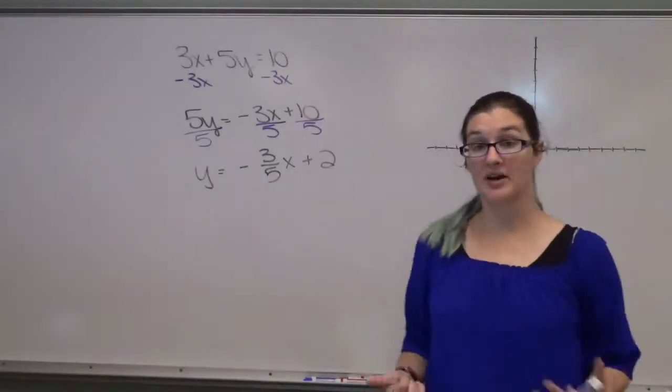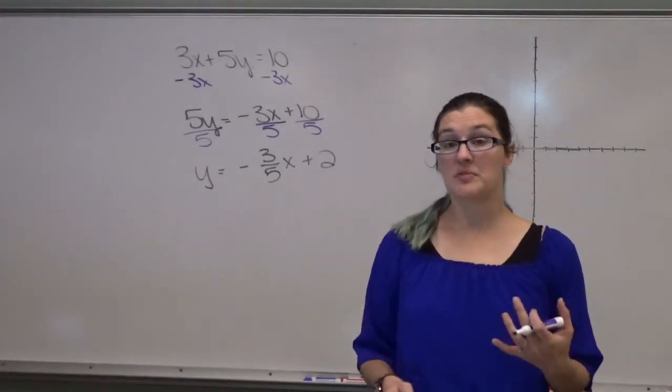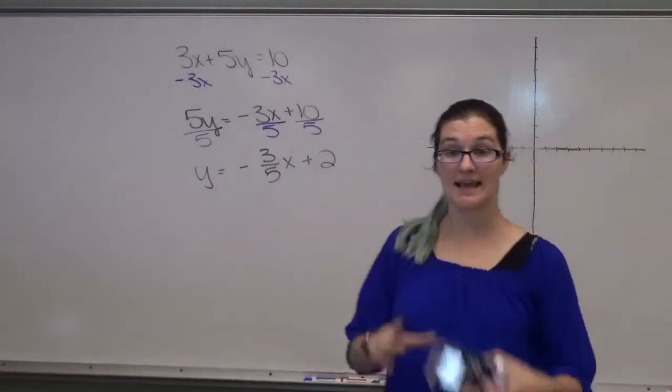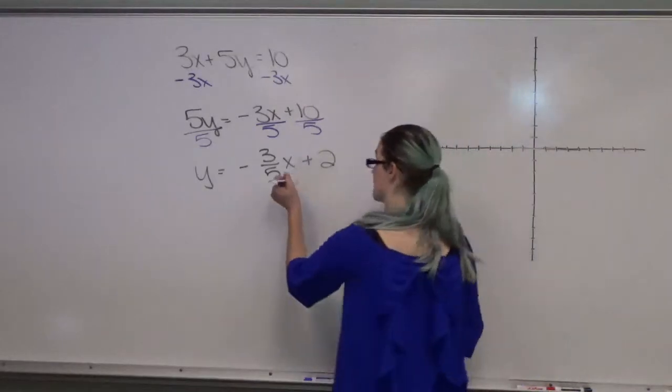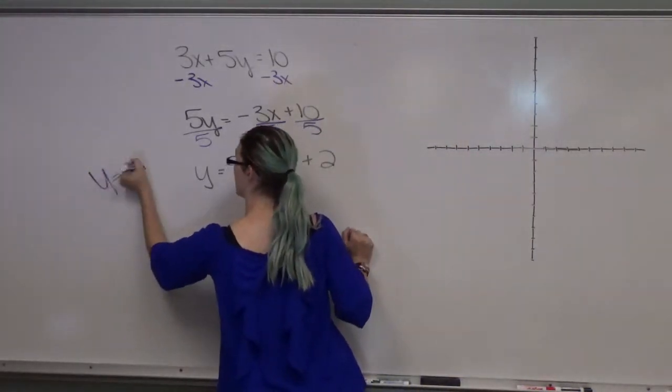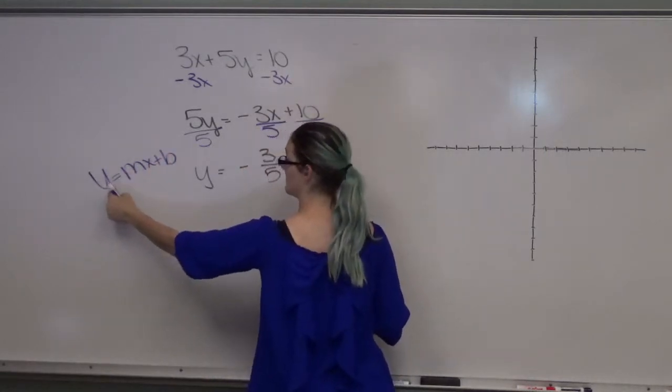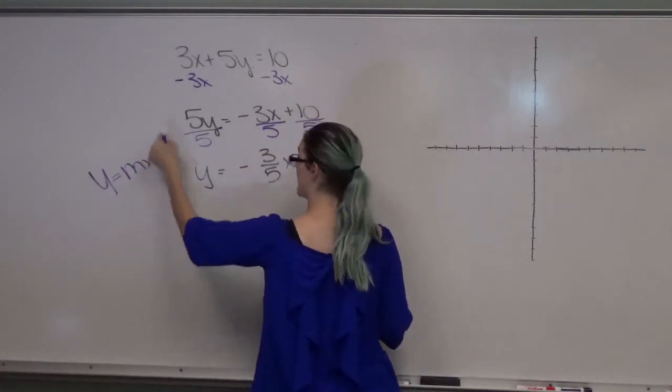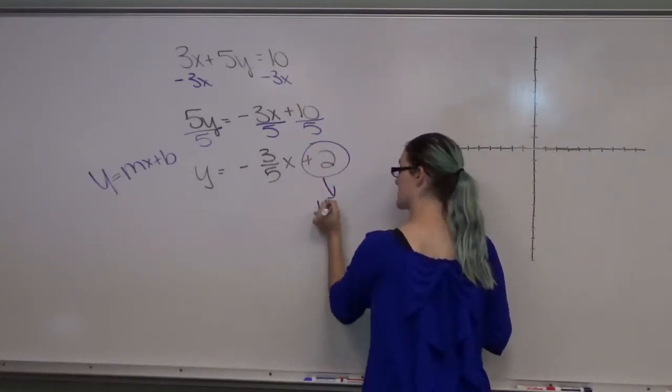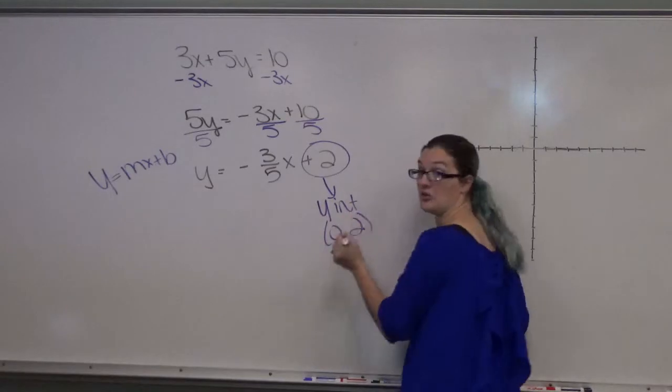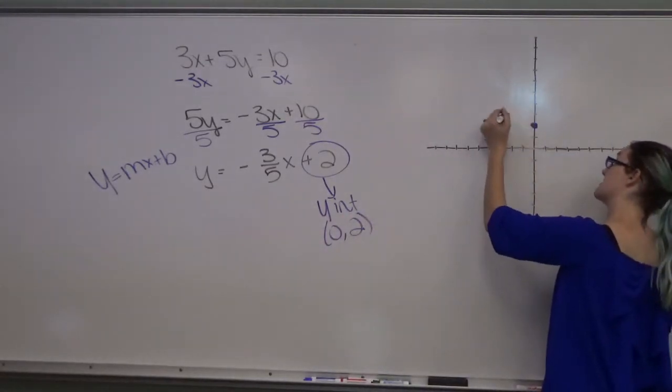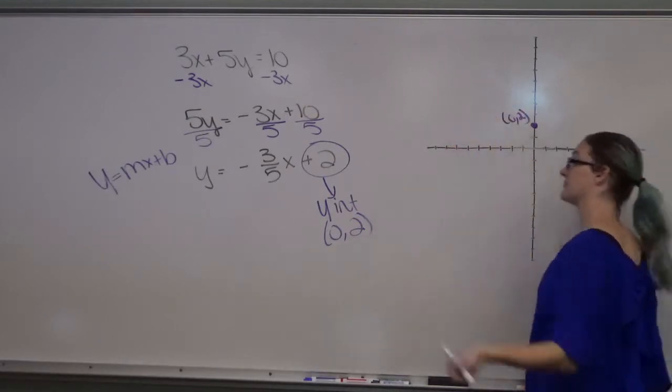Now, once you learn how to graph, you should be able to graph this a whole lot faster by hand than with the calculator. So what we're going to do is I'm going to tell you what this formula is. It's y equals mx plus b. As long as y is completely alone, the number that does not have a variable, that's your y-intercept. That's 0, 2. Okay? So we come over here, 0, 2.